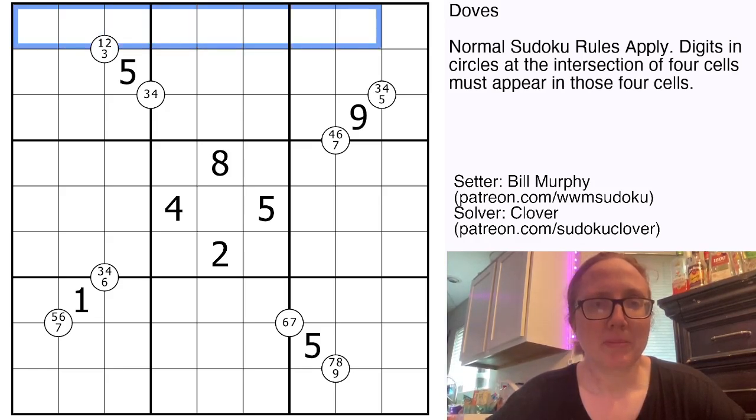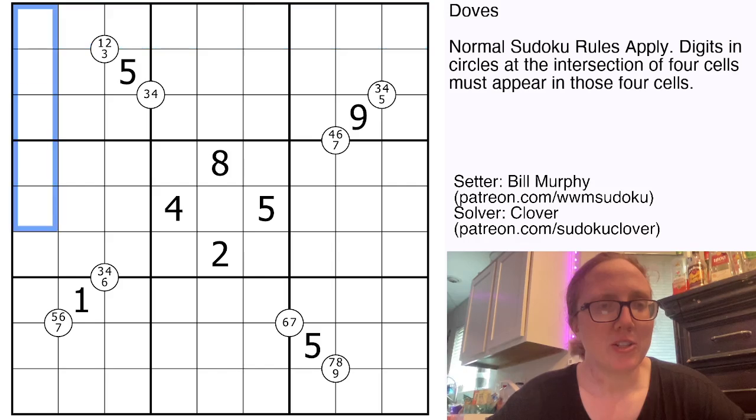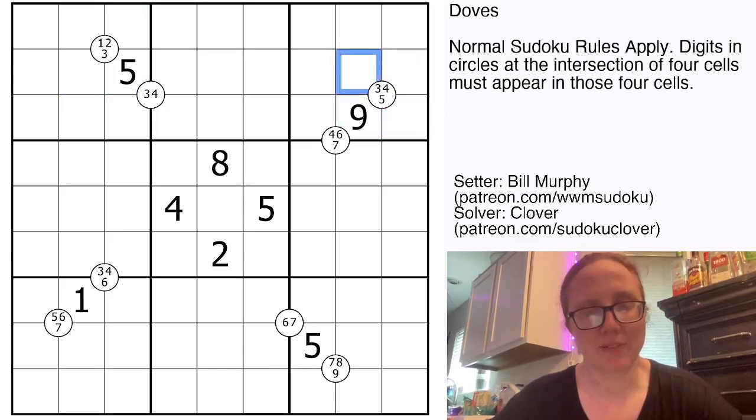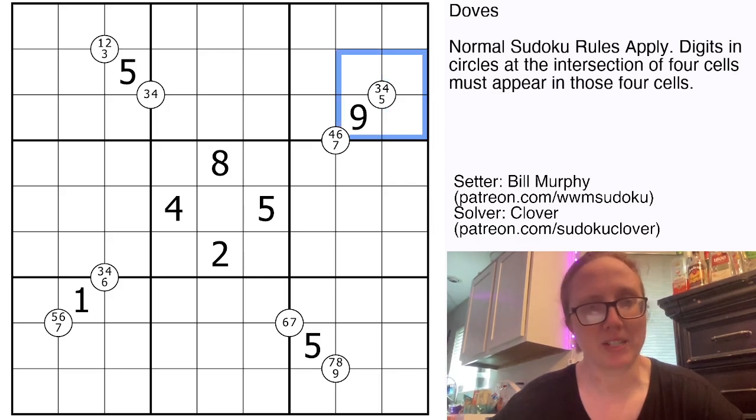This is normal Sudoku, so we're placing the digits one through nine once each in each row, each column, and each heavily outlined three by three region. On top of that, we have some quadruples clues in the grid. Quadruples clues tell you that the digits in the white circle have to show up somewhere around that circle in those surrounding four cells. So for instance, there have to be a three, four, and five somewhere in these four cells.